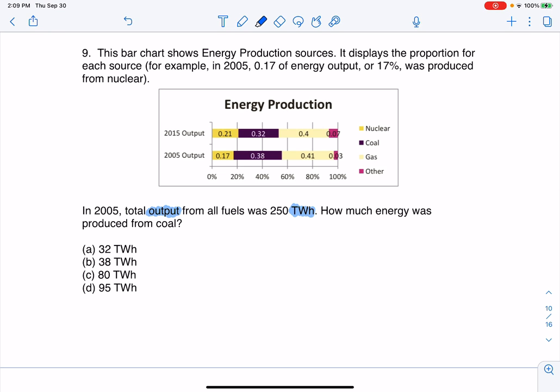So it says it's specifying we want to be on the 2005 bar. And it says how much energy was produced from coal. So if we look at coal in 2005, it's purple. So I've got this 38%. So let me write this, that 38% of output was from coal.